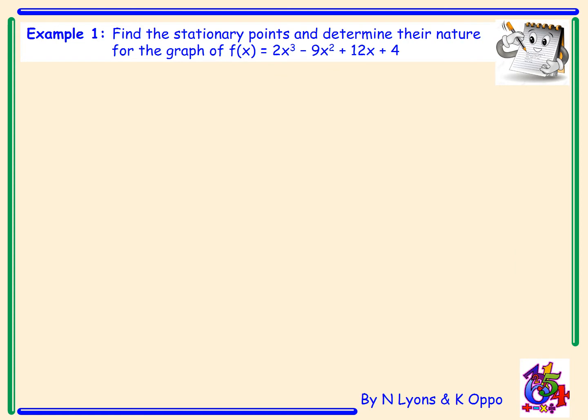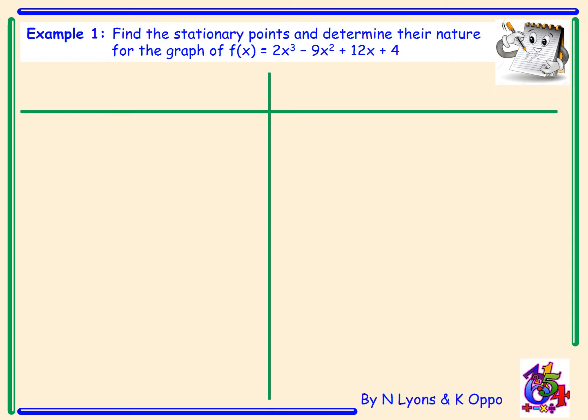Example 1. Find the stationary points and determine their nature for the graph of f(x) equals 2x cubed minus 9x squared plus 12x plus 4. We will split our page in two — on the left-hand side we'll work with our derivative and on the right-hand side our original function.